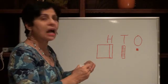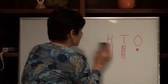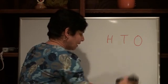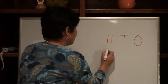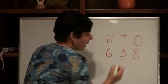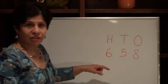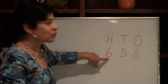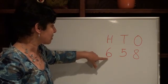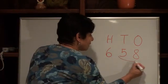Now let's see how we're going to read the numbers. I'll write a number — let's say this one. I think most of you would be able to read that. All you do is tell the place value: the number, and then the place value. So six hundred and fifty-eight — that goes together.